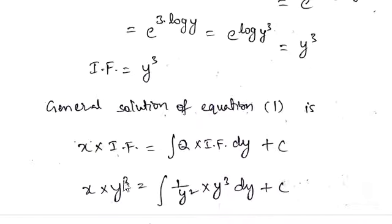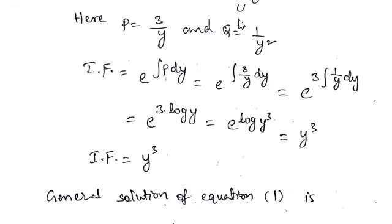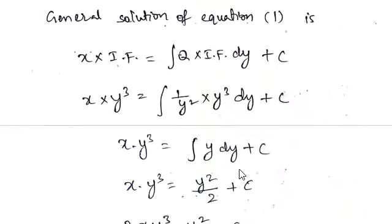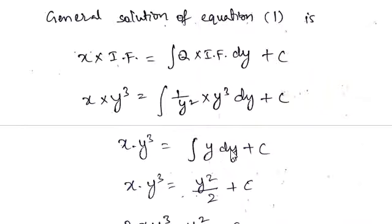Substituting into the general solution: x·y³ = ∫(1/y²)·y³ dy + c. Simplifying y³/y² = y, so x·y³ = ∫y dy + c. Since ∫y dy = y²/2, we get x·y³ = y²/2 + c.